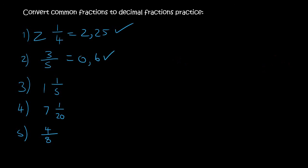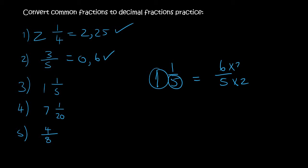So 1 and a fifth, 1 and 1 over 5 — you always want to change it to an improper first, so that's 5 plus 1, which is 6 over 5. 10 is good, so you times by 2, which gives you 12 over 10. There is only one zero at the bottom, the decimal is at the back, so we move it just once, and so your answer is 1.2.